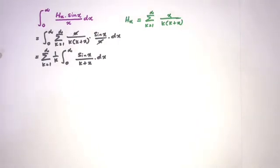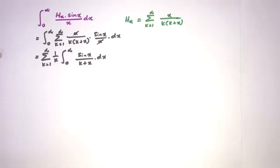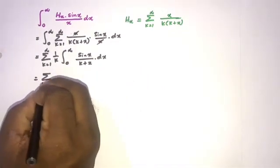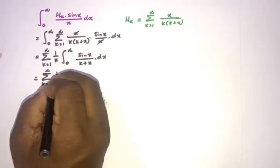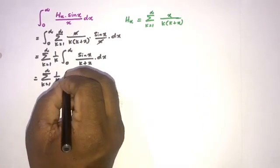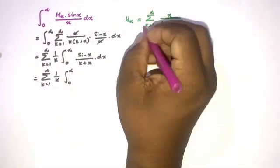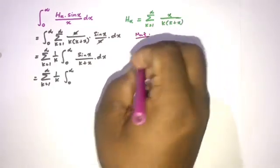Now we have another interesting integral: sine(x) over (k plus x). You may remember this concept because we evaluate the integral of sin(x)/x from 0 to infinity using the Parseval-Laplace identity — the so-called 'Mass identity'. I am going to use that identity here.